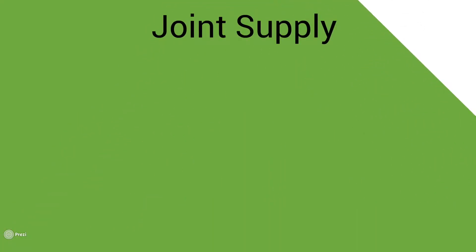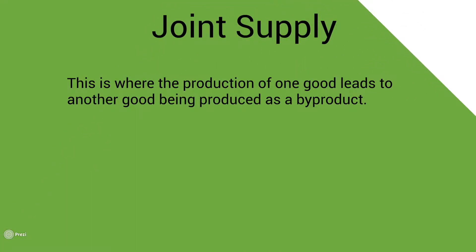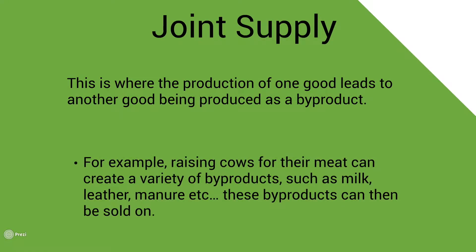Joint supply is where the production of one good leads to another good being produced as a by-product. For example, raising cows for their meat can create a variety of by-products such as milk, leather, and manure. These by-products can then be sold on.